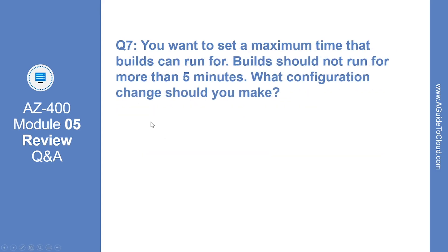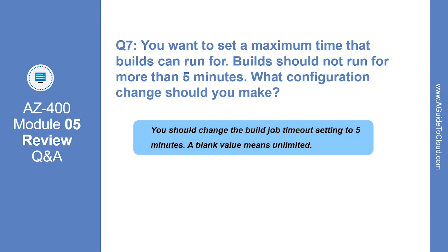Let's look at question number seven: You want to set a maximum time that builds can run for, and builds should not run for more than five minutes. What configuration change should you make? The correct answer is you should change the build job timeout setting to five minutes. A blank value means unlimited.